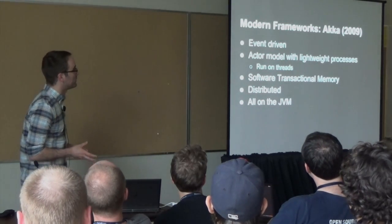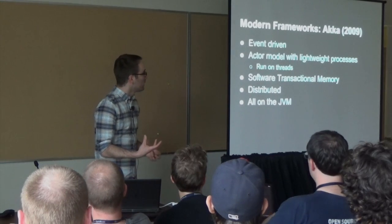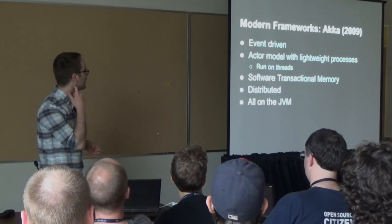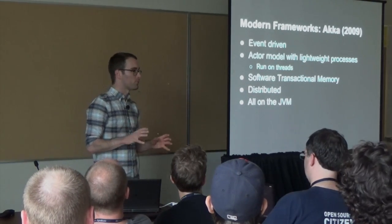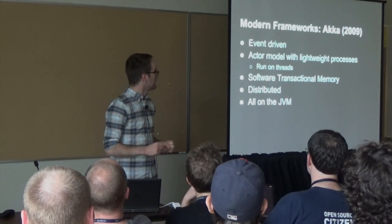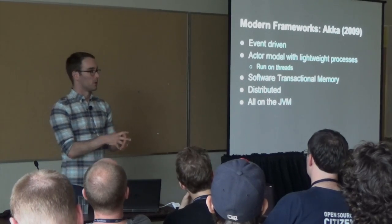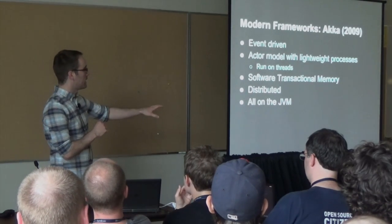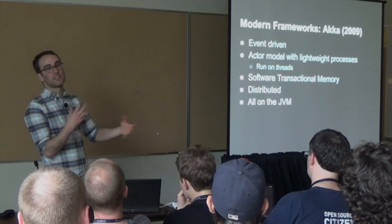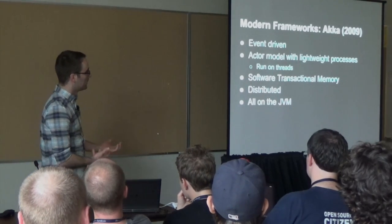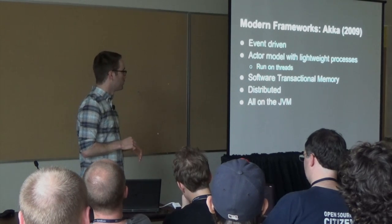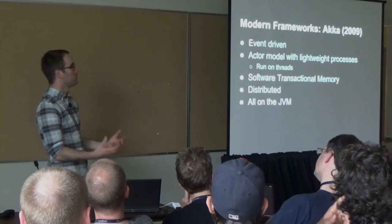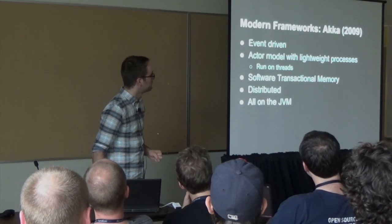A modern framework that builds concurrency models on top of threads is Akka. It's event-driven, has an actor model with lightweight processes scheduled on OS threads like Erlang and Go, also has software transactional memory, is distributed across multiple machines, and it's all on the JVM. This is a great example of taking a language without concurrency built in — Java, and Scala — and adding these features on top of good old threads and queues, building up a very high-level, safe-to-work-with API.